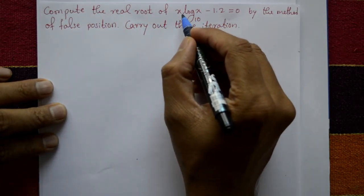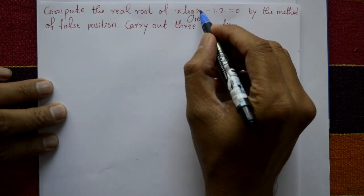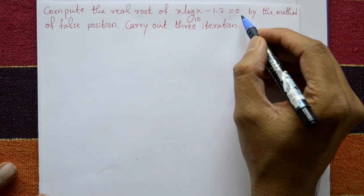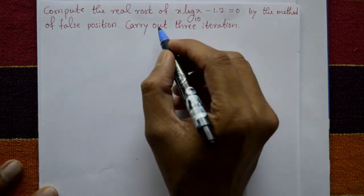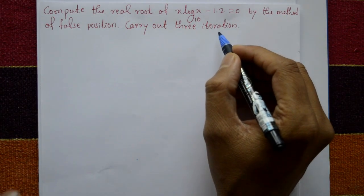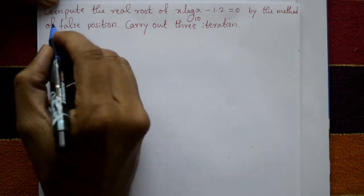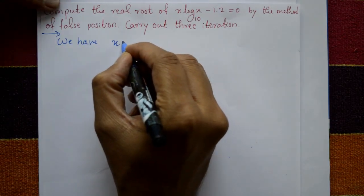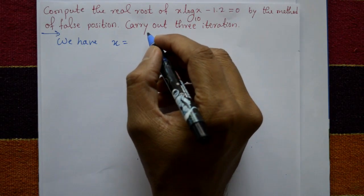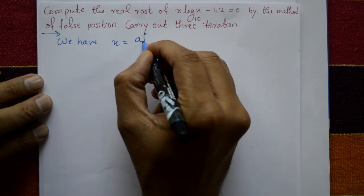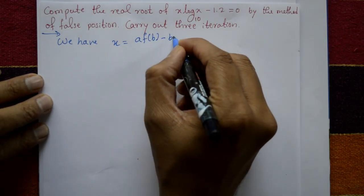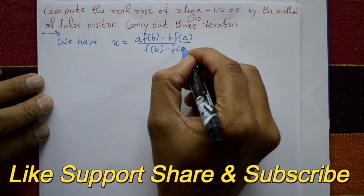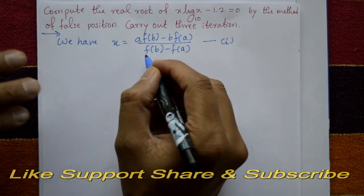Compute the real root of x·log₁₀(x) - 1.2 = 0 by the method of False Position, carrying out 3 iterations — that means 3 approximations. The formula is: x = [a·f(b) - b·f(a)] / [f(b) - f(a)]. This is equation number 1.